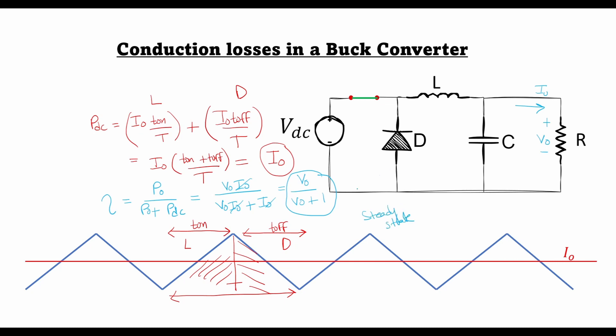As you can see, the DC losses are quite easy to calculate. In the next lecture we will look at the AC losses in a buck converter, and then we can combine the two and calculate the total efficiency. So that's it for today. See you in the next lecture.